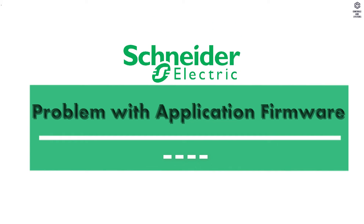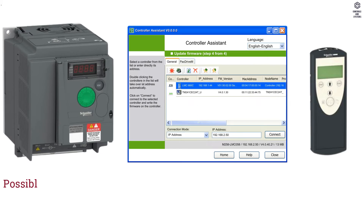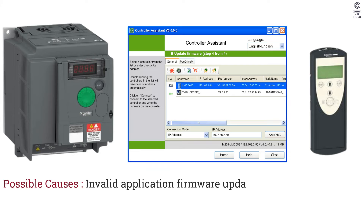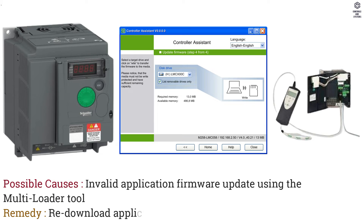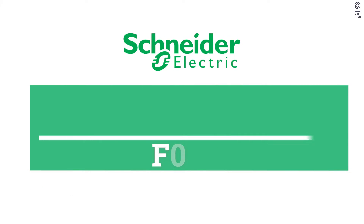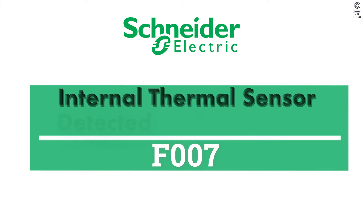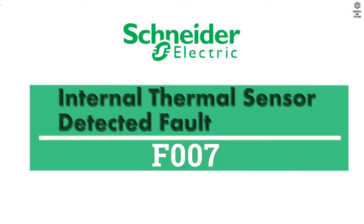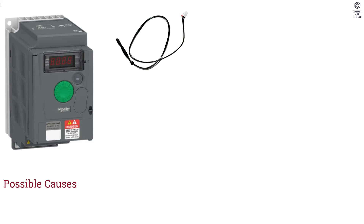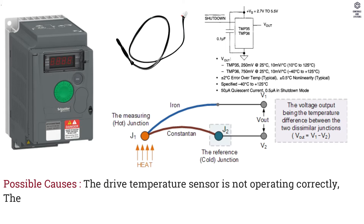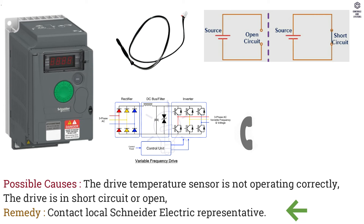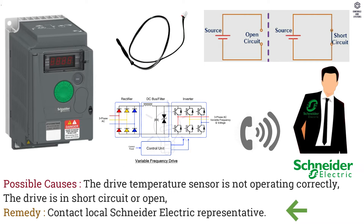Problem with Application Firmware. Possible Causes: Invalid Application Firmware Update Using the Multiloader Tool. Remedy: Redownload Application Firmware. F007 Internal Thermal Sensor Detected Fault. Possible Causes: The Drive Temperature Sensor is not operating correctly, or the drive is in short circuit or open.